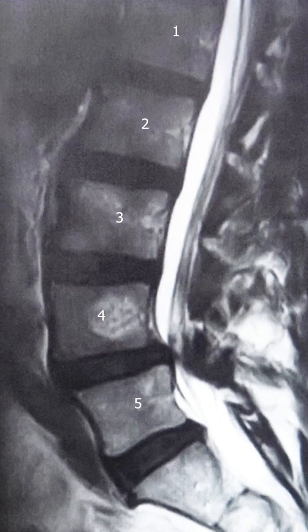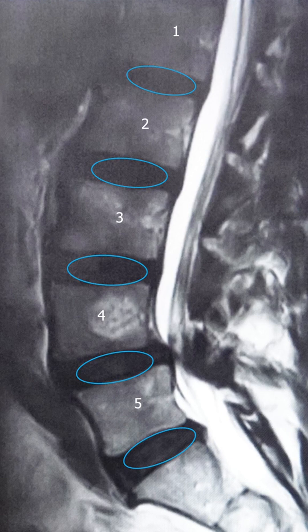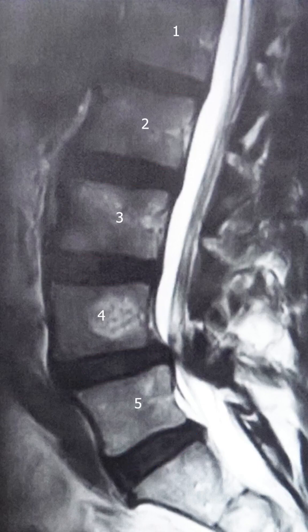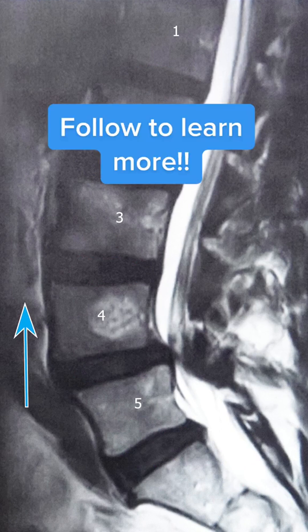In between the bones are the dark spaces, which are the discs. And again, we're looking in from the side. This is the tailbone down here, this is the front of the abdomen, and this is the outside of the back.